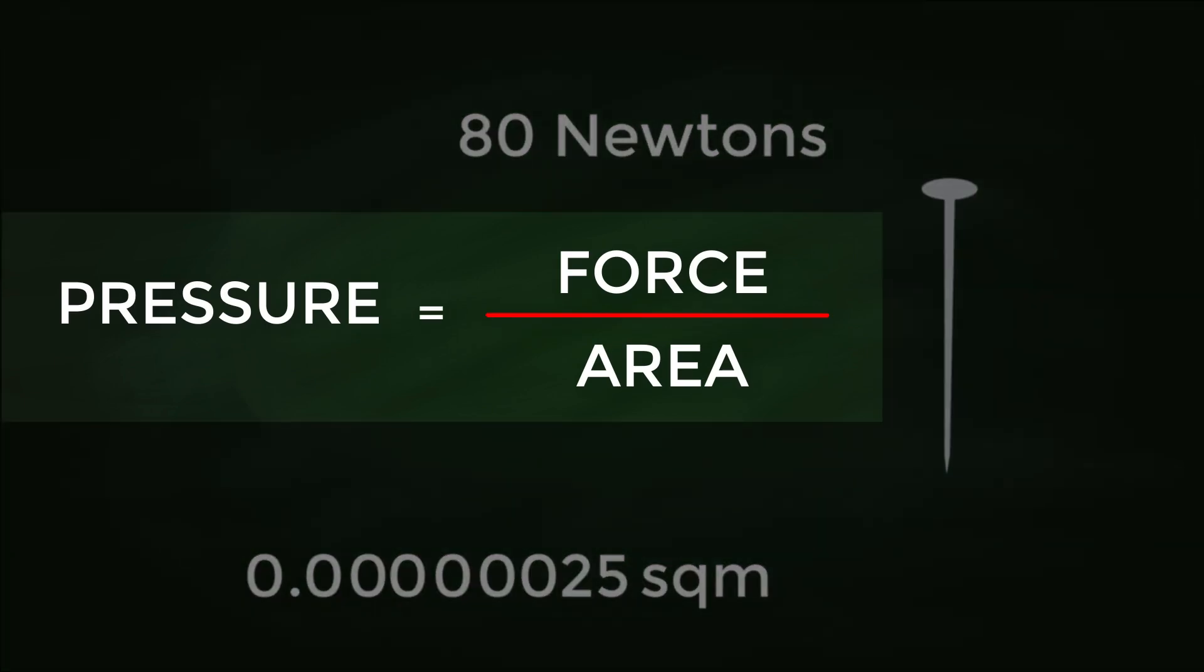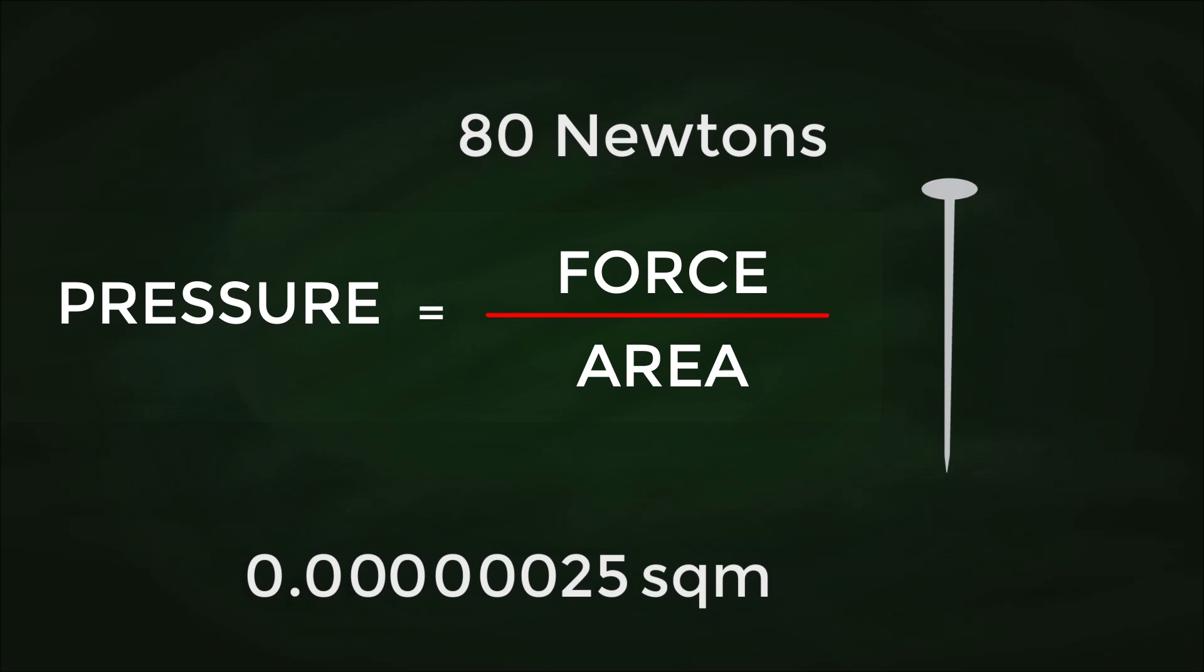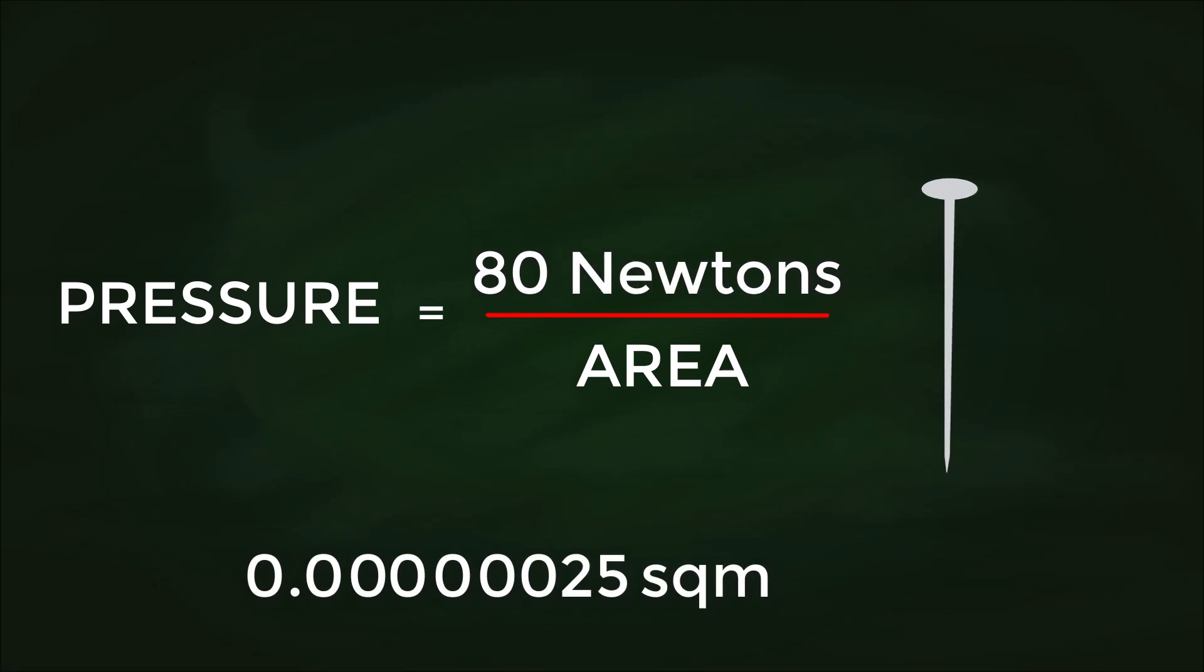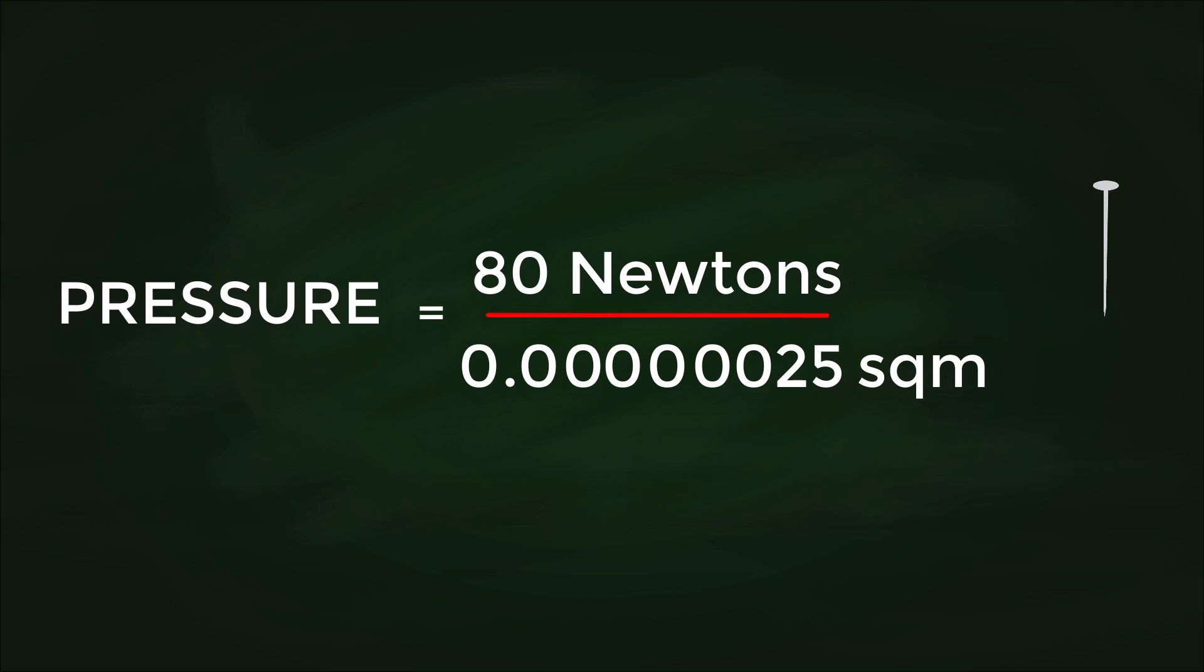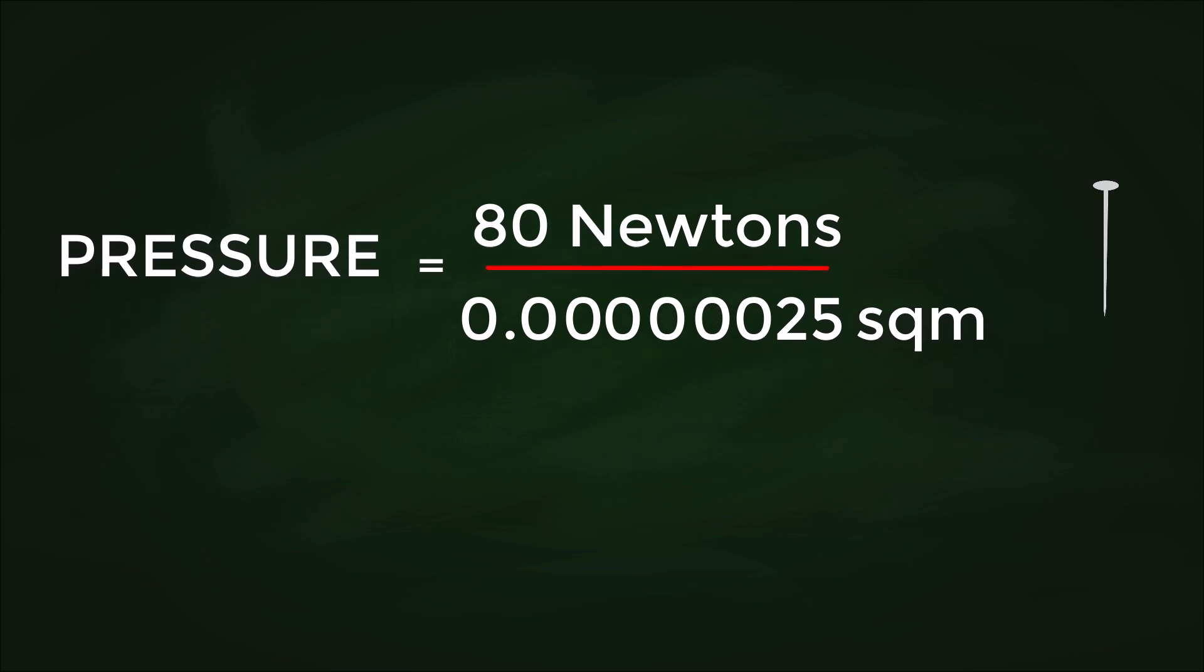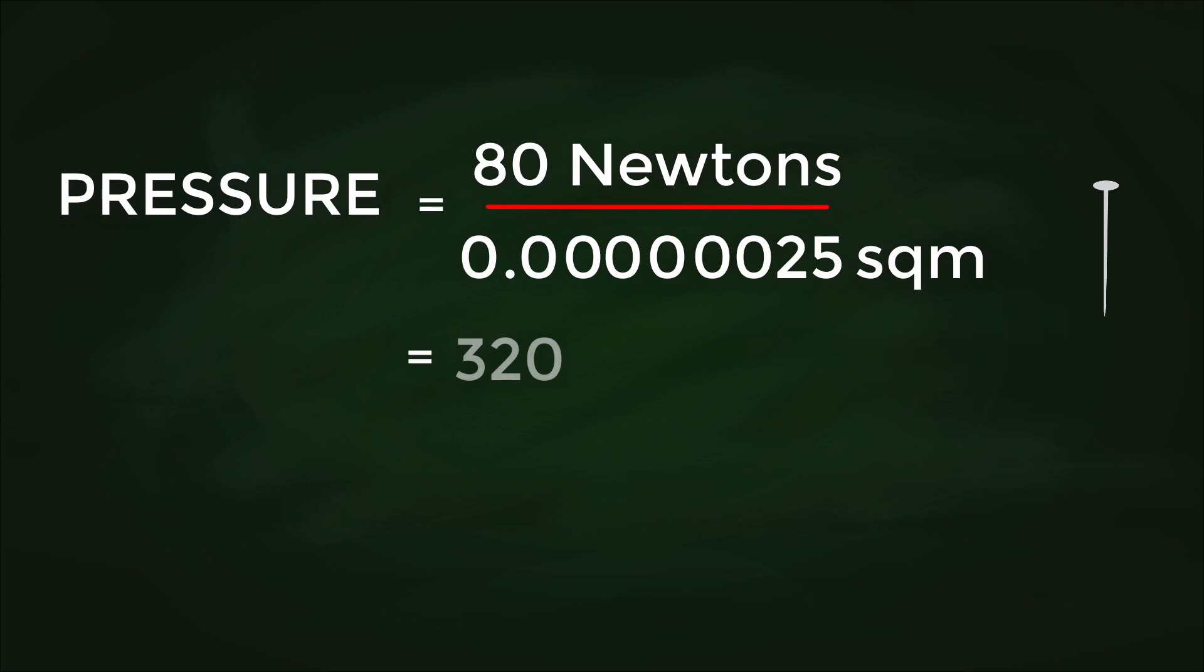Here's our formula again. Pressure equals force divided by area. Let's substitute the values into the equation: 80 newtons divided by 0.00000025 square meters. You'll probably need a calculator for this—I know I do. Okay, here we go. Wow, 320 million pascals.